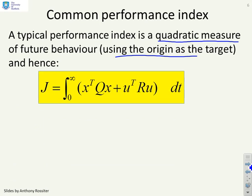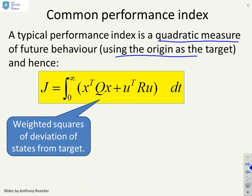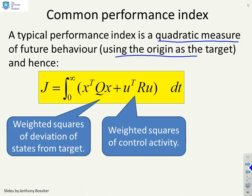We can define our performance using this measure: the integral from 0 to infinity of x transpose Qx plus u transpose Ru. You'll notice this has weighted squares of the deviation of the states from the target, assuming the target is the origin, and it's got weighted squares of control activity.